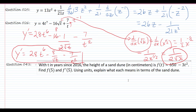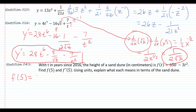The next one says: with t years since 2016, the height of a sand dune is given as f of t equals 650 minus 3t squared. Find f of 5 — so f of 5 is simply taking the function and plugging in 5 where you see t. Throwing 650 minus 3 times 5 squared into your calculator, you should get 575.